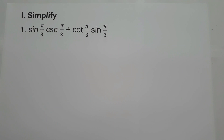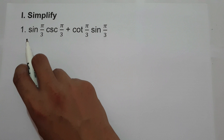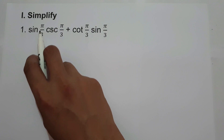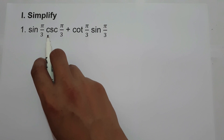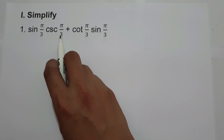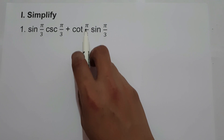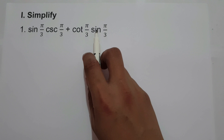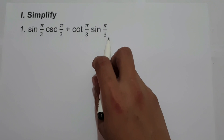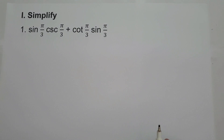In this video, we are going to explain in detail how to simplify sine pi over 3 times cosecant pi over 3, plus cotangent pi over 3 times sine pi over 3.